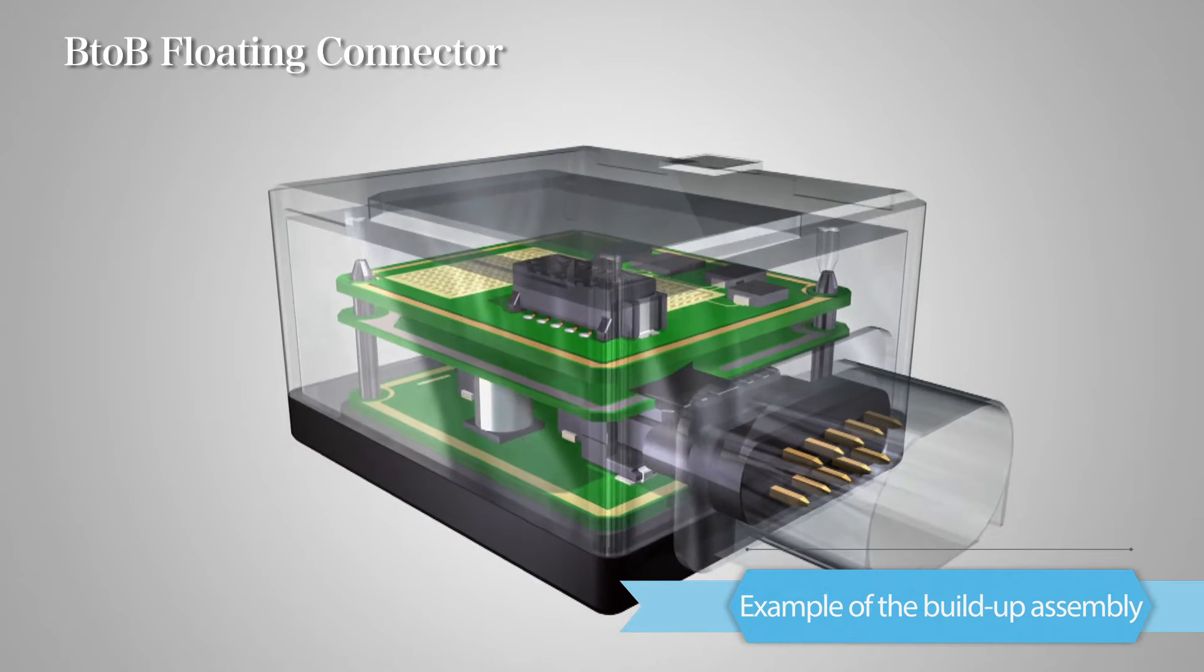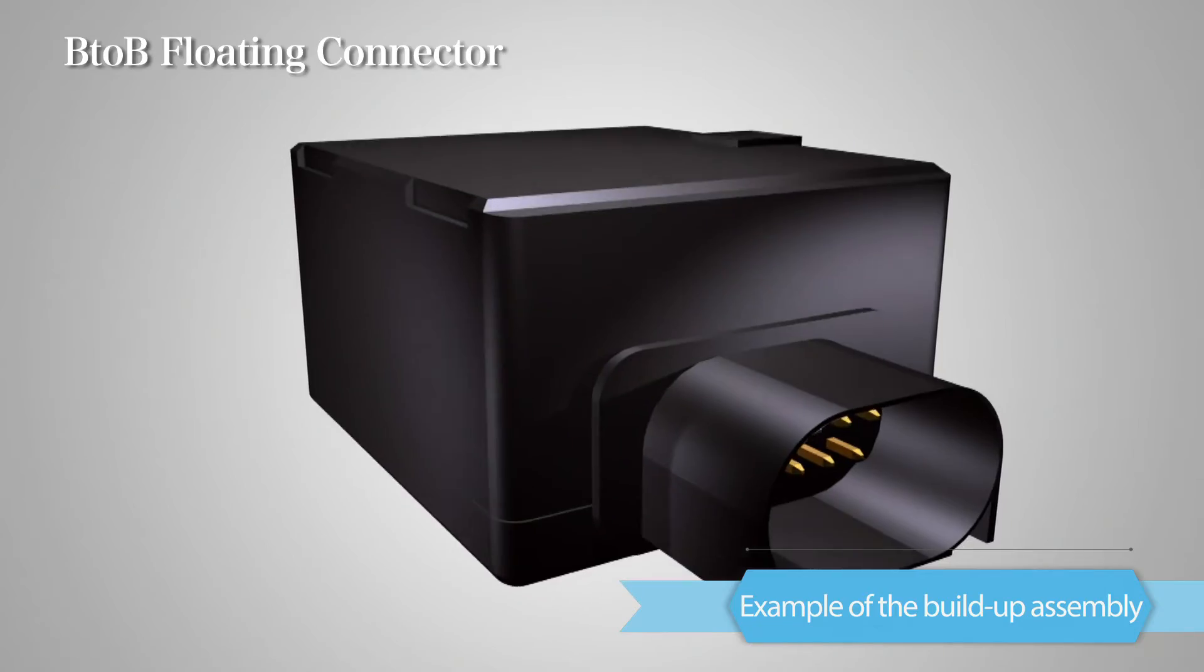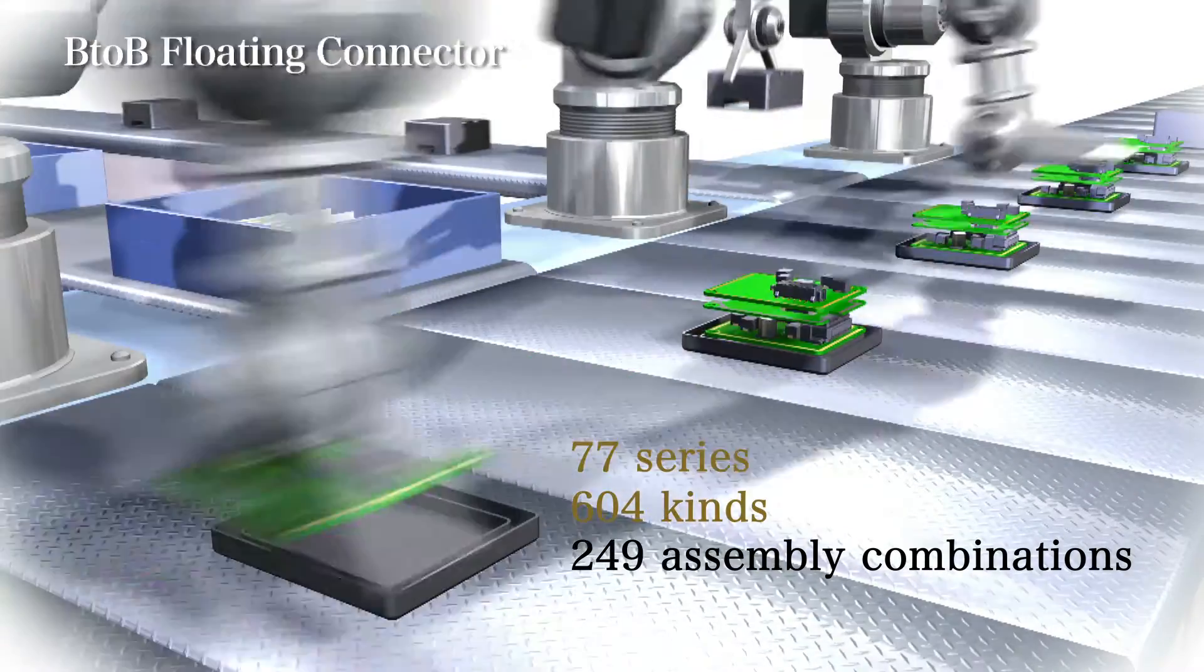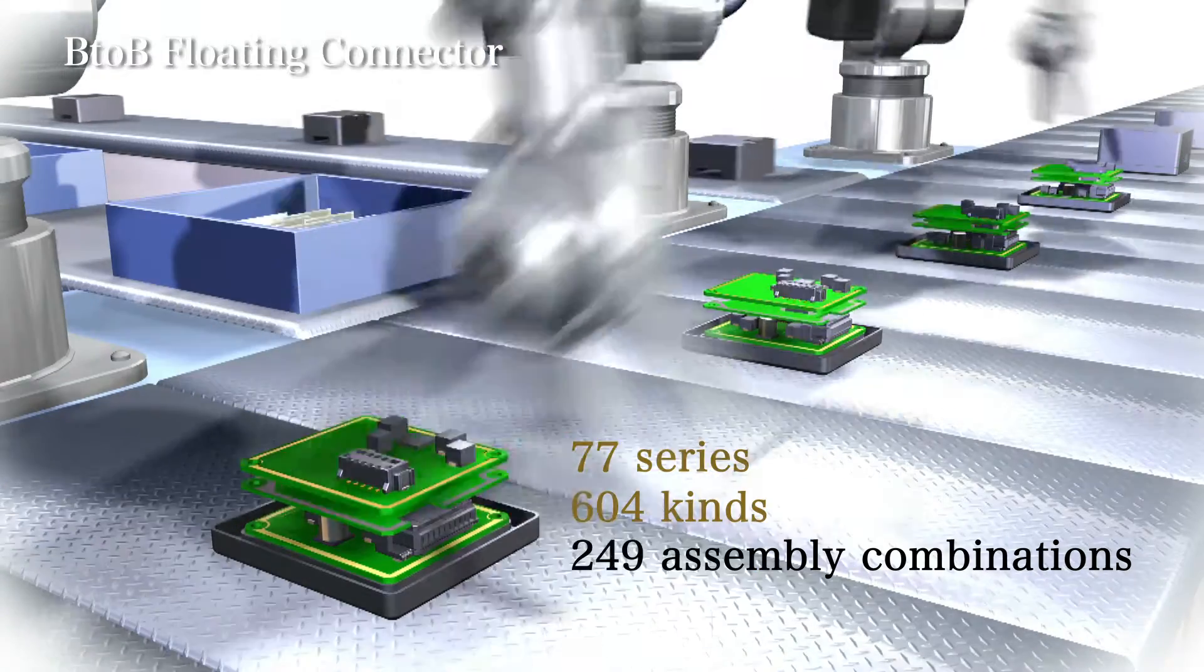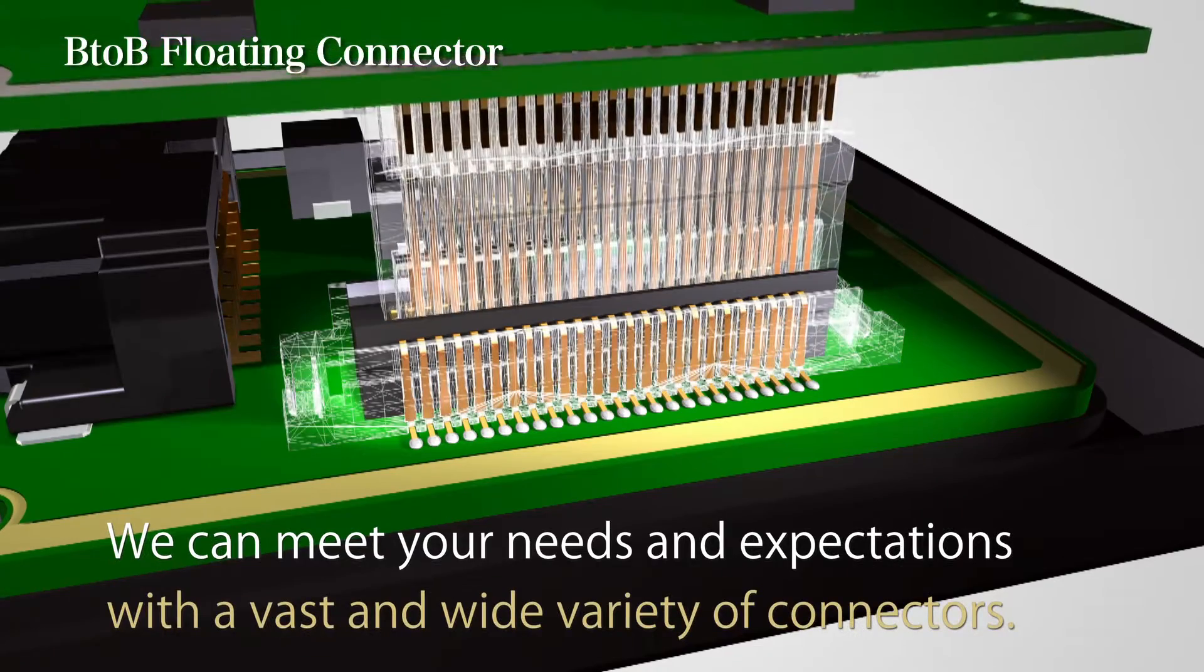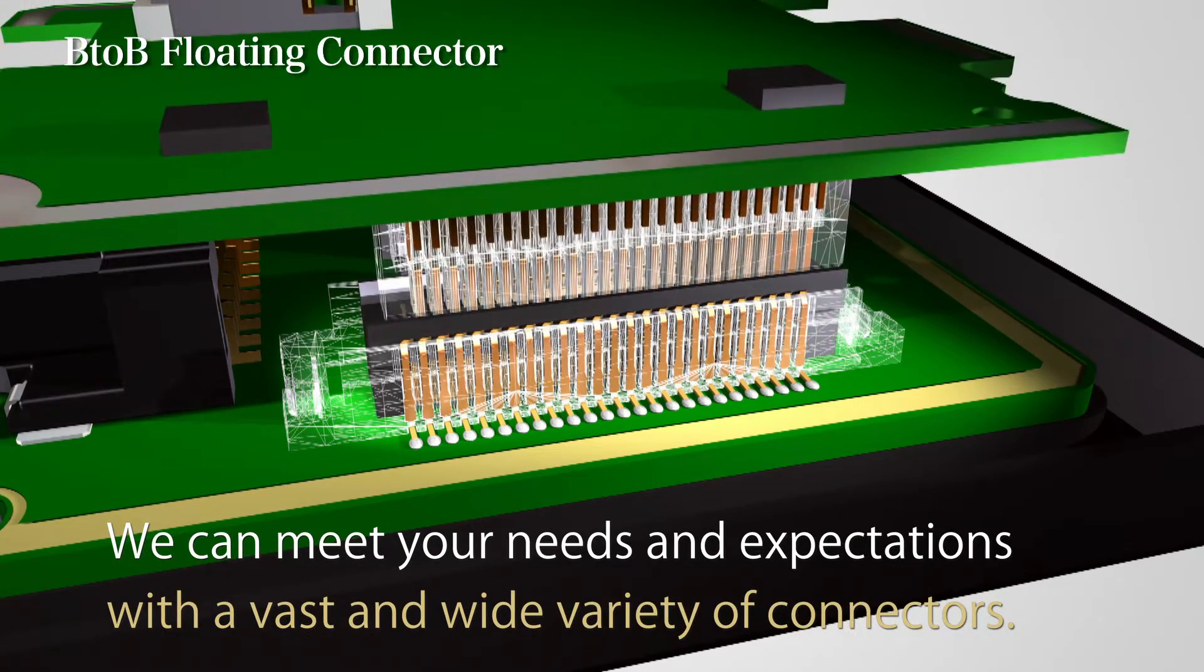There are 77 series, 604 kinds, and 249 assembly combinations for the ELISO B2B floating connector. We can meet your needs and expectations with a vast and wide variety of connectors.